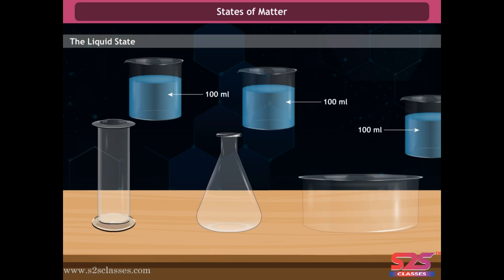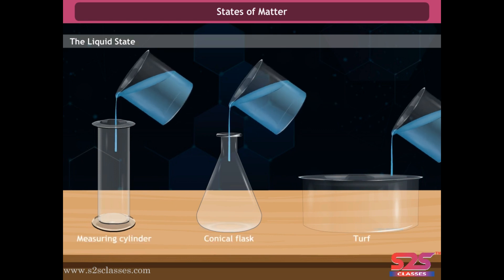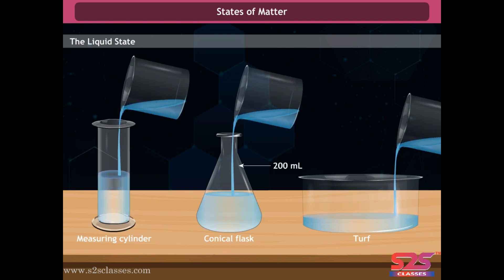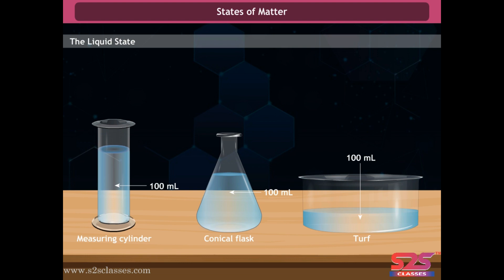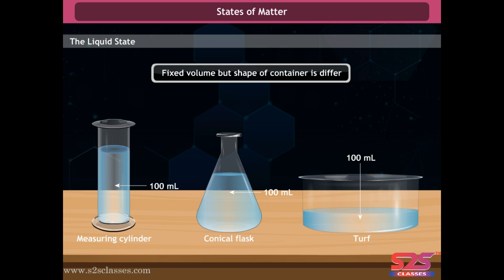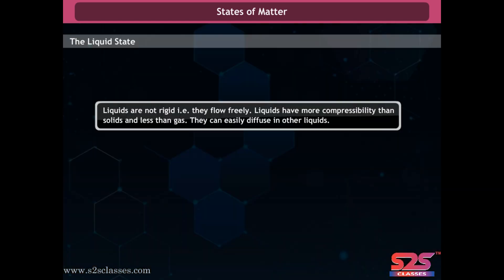Take 100 milliliters of water in a container and pour it into different containers such as 200 ml, 250 ml, and 150 ml, and observe the level of water. The level of water in the containers differs, but the amount of water is the same in all containers. We conclude that liquids have a fixed volume but the shape is not fixed — liquids acquire the shape of their container, flow freely, and can easily diffuse in other liquids.